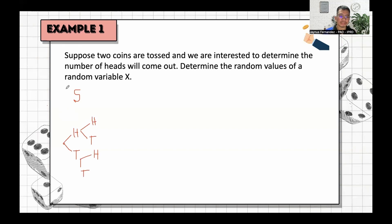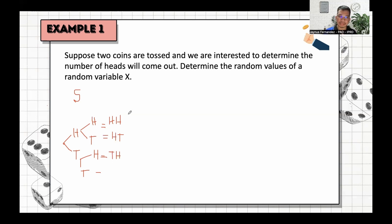The possible outcomes in this combination are: head and head, head and tail, tail and head, and tail and tail. Thus, there are four sample points in the sample space: HH, HT, TH, and TT.